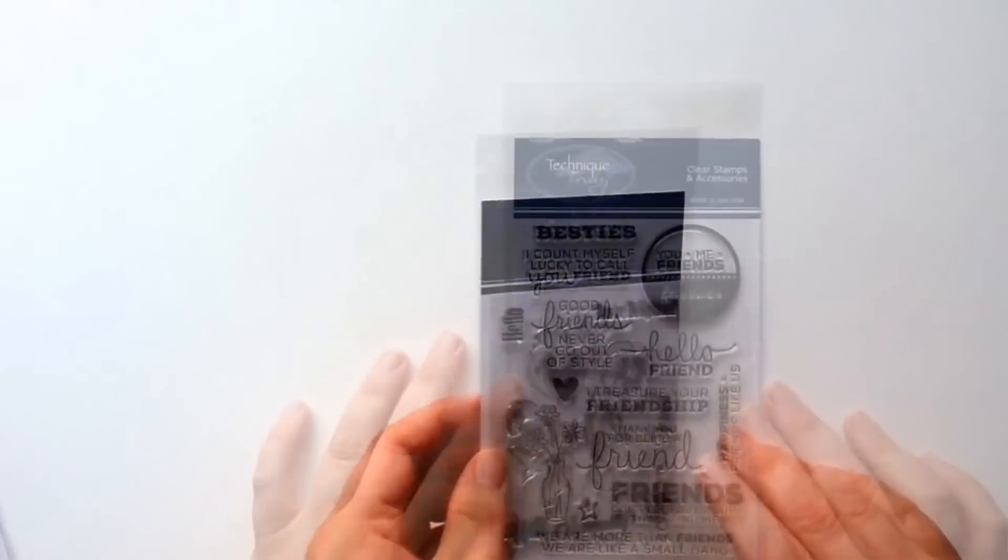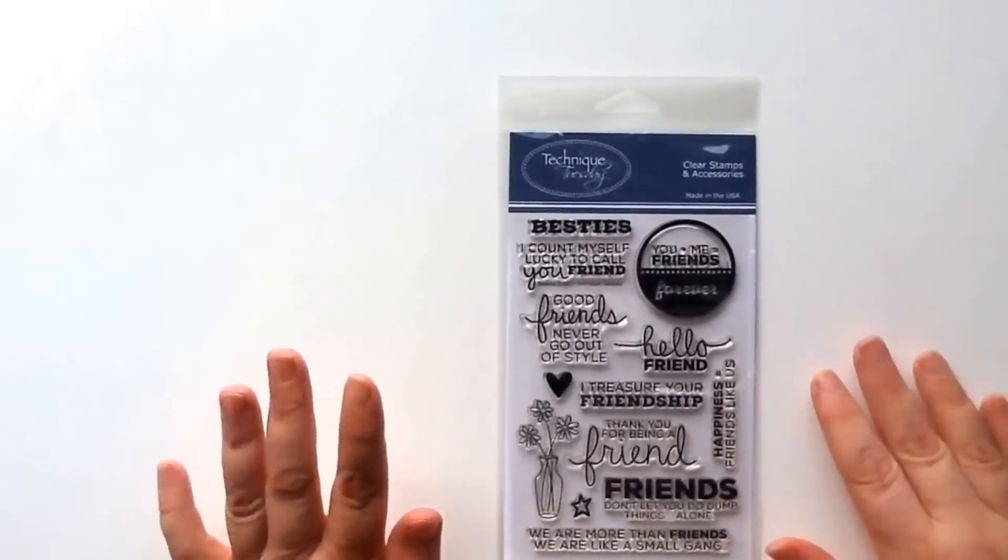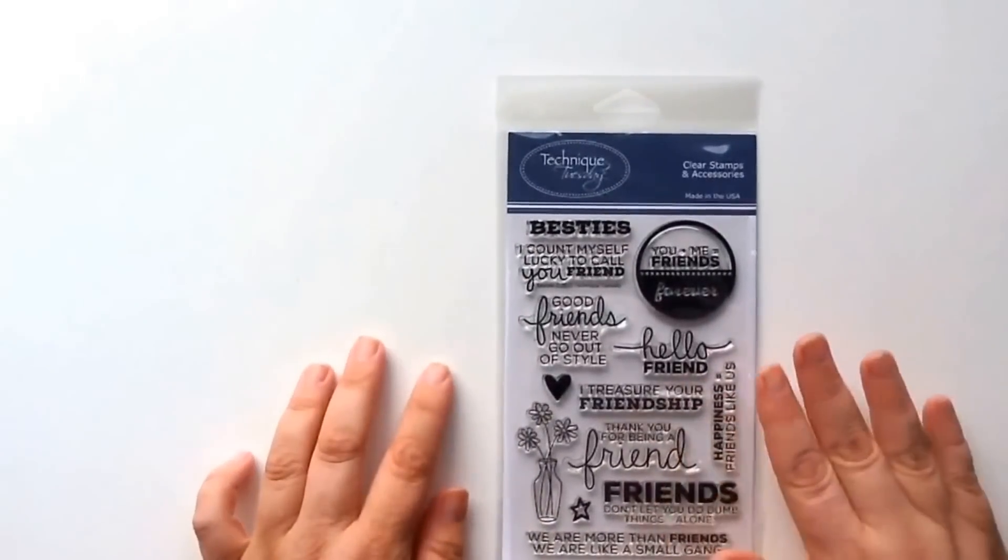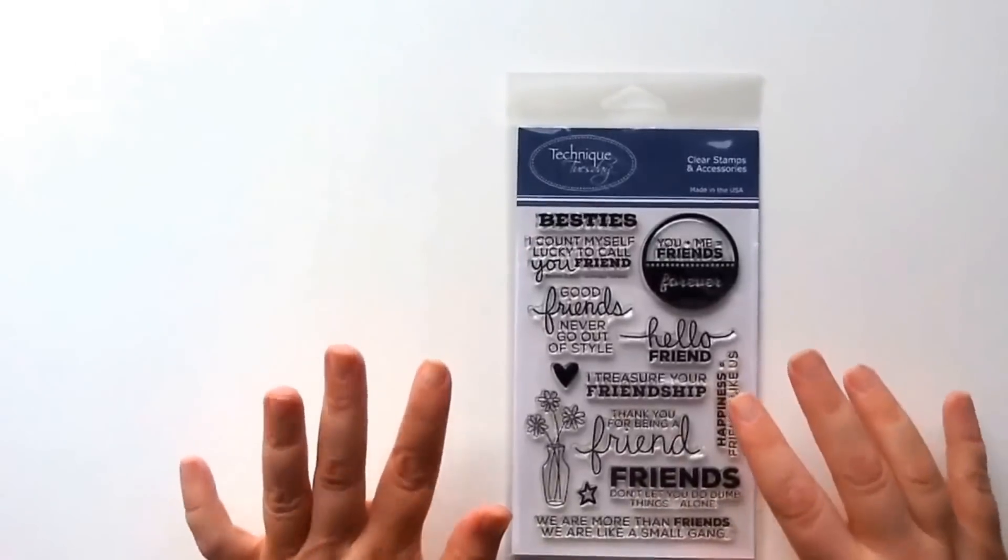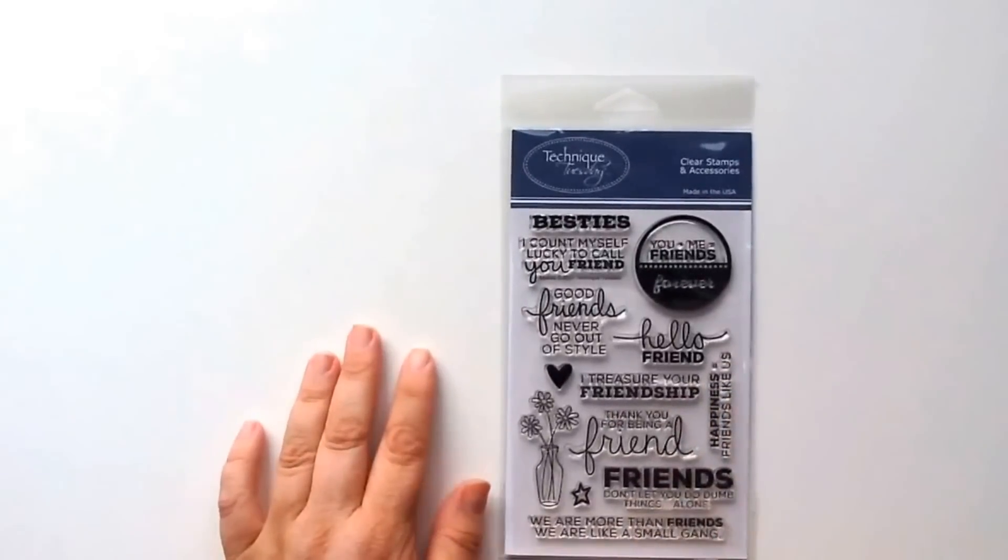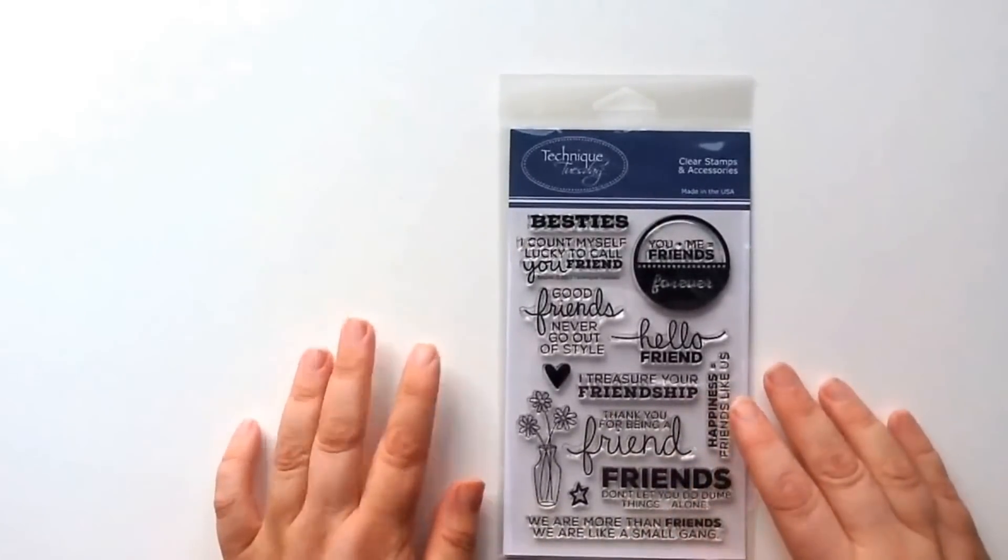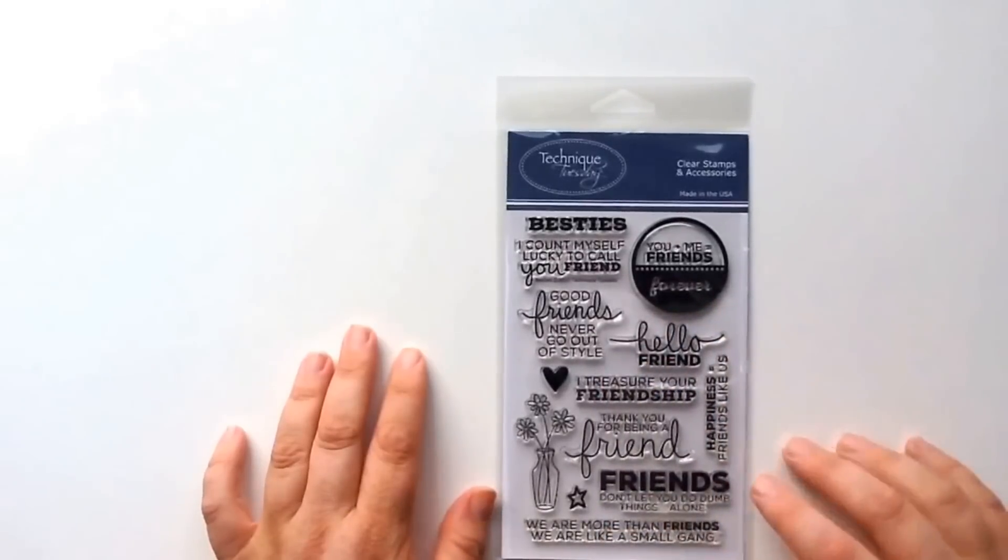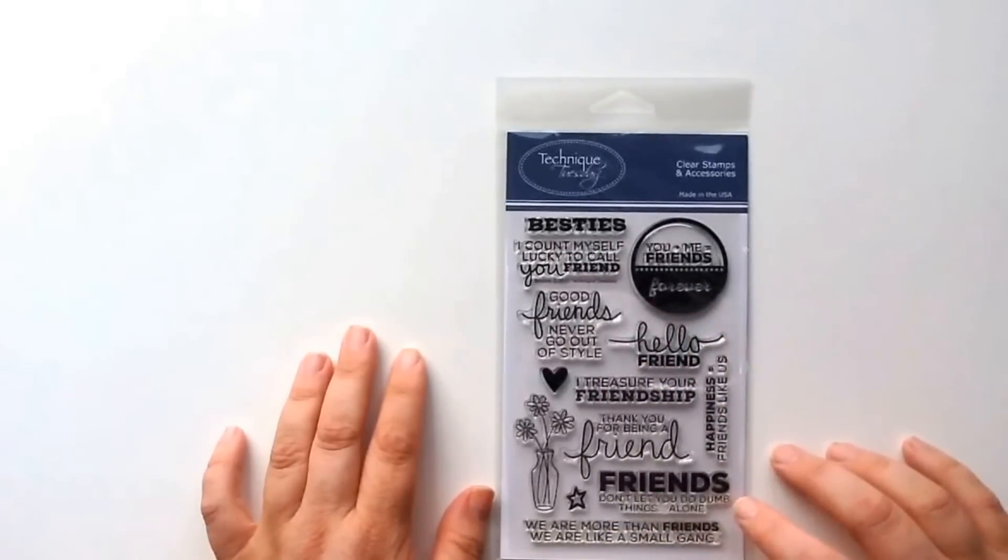And definitely one of my favorite stamp sets of this month is the new Bestie stamp set. This is a great stamp set with all kinds of great phrases about friendship: 'Good friends never grow out of style,' 'Friends don't let you do dumb things alone,' 'We are more than friends, we are like a small gang.' Love that.